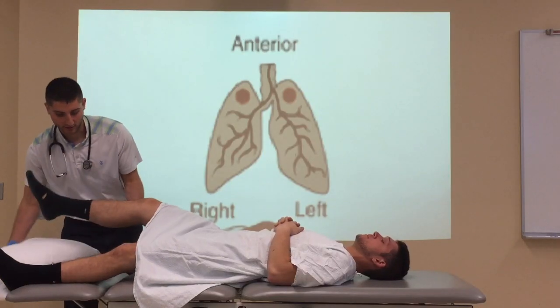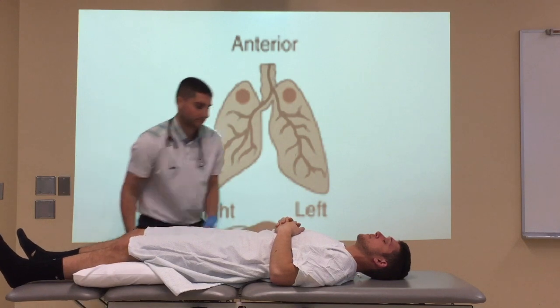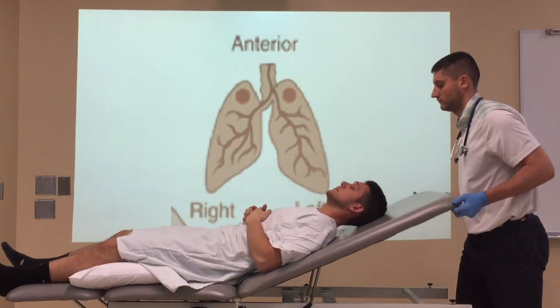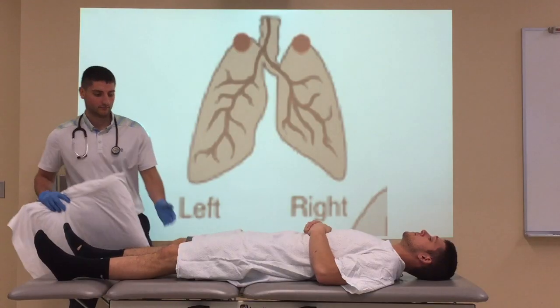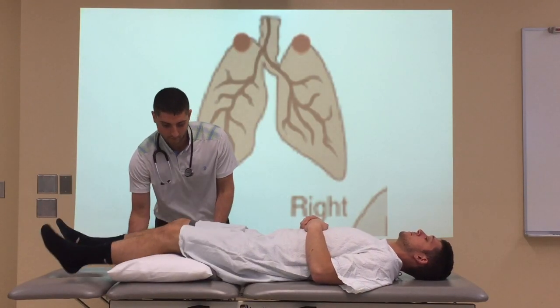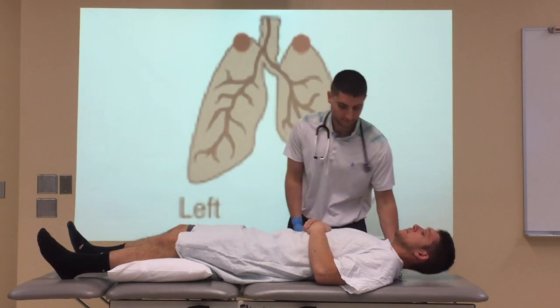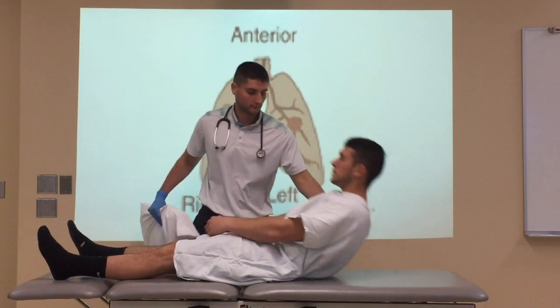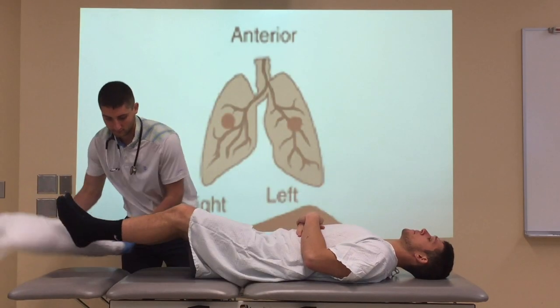Now we look at several postural drainage positions that may be appropriate for your patient population. For the anterior upper segments, your patient should be positioned supine with the table in Fowler's and a pillow under the knees for comfort. For posterior apical segments, your patient should be positioned in long sitting with the trunk flexed and a pillow under the knees for comfort. For anterior segments, your patient should be positioned supine with pillows under the knees for comfort.